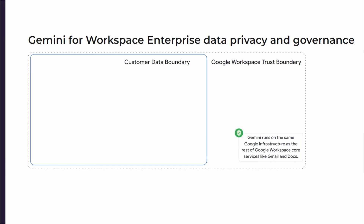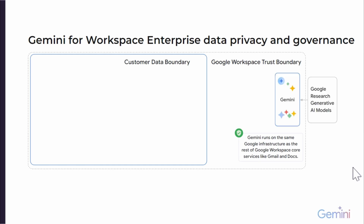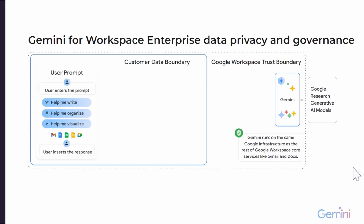Looking at Gemini itself, it's built off Google's research, its generative AI models, its LLMs. On the left-hand side we have the customer data boundary, and we have a user prompt. A user may prompt something like: help me write, or help me organize, or help me visualize. Gemini does not access content in Google Workspace that you do not have permission to access. So the user will only have access to what the user has access to right now. Gemini doesn't give any additional access to new information or documents.